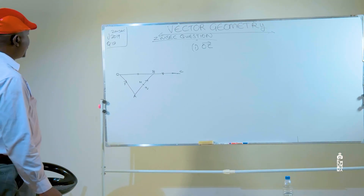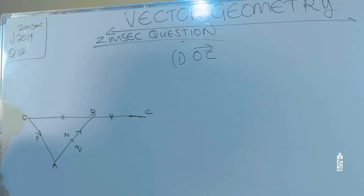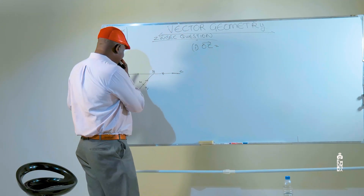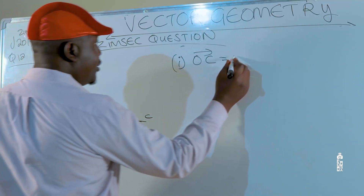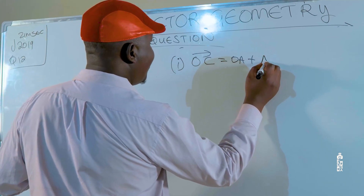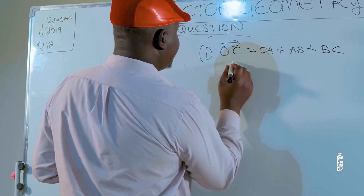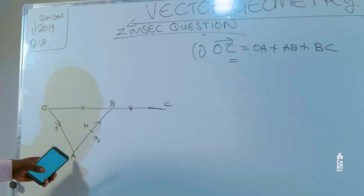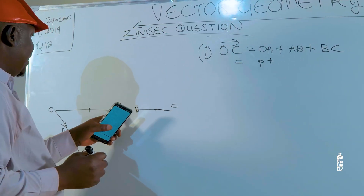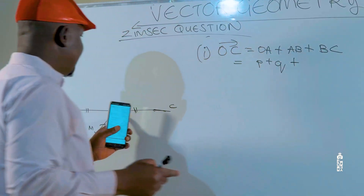To find vector OC, we have an alternative path: we start with vector OA plus AB plus BC. So this is going to be equal to vector OA which is P, plus vector AB which is Q, then plus vector BC.